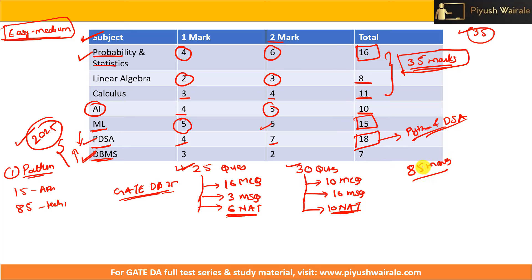The key takeaway is to focus more on Probability & Statistics, Linear Algebra, and Calculus. Algebra and Calculus questions were easy — if you've watched the tutorials I've provided, you'll be able to do these questions easily. I've already provided Linear Algebra and Calculus tutorials, which will be sufficient if you have a basic understanding of engineering mathematics.